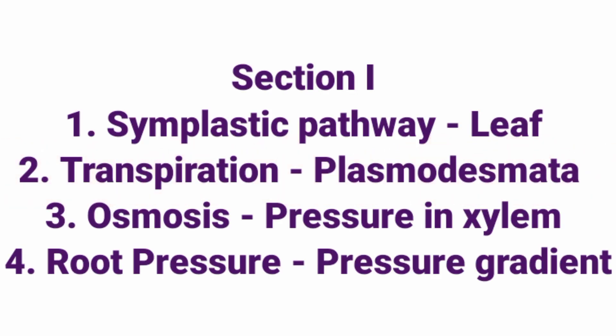Match the following — Section 1. Column 1: Symplastic pathway, Transpiration, Osmosis, Root pressure. Answers: Symplastic pathway — Plasmodesmata; Transpiration — Leaf; Osmosis — Pressure gradient; Root pressure — Pressure in xylem.